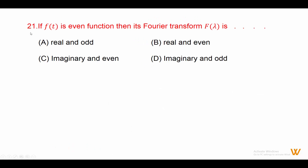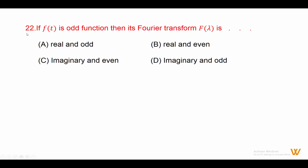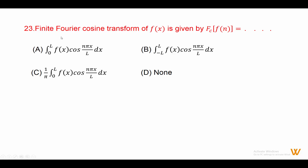Twenty-one: if f(t) is an even function, then its Fourier transform F(lambda) is real and even. Answer is option B: real and even. Twenty-two: if f(t) is an odd function, then its Fourier transform F(lambda) is imaginary and odd. Answer is option D: imaginary and odd.